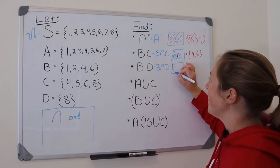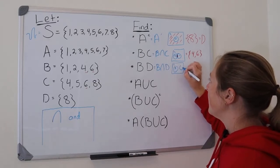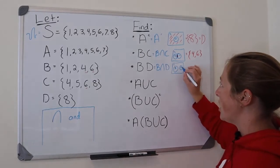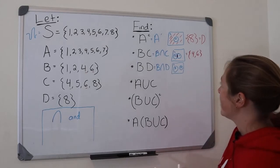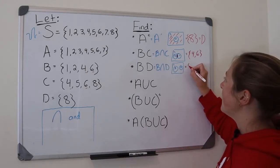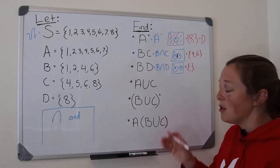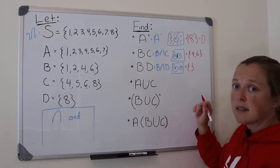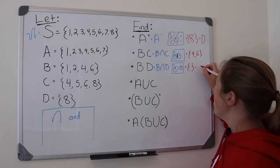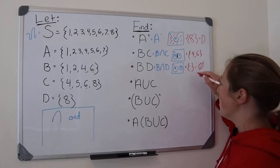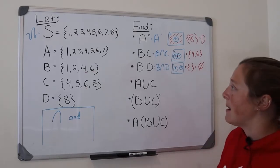So what's our answer? It's the empty set. A few ways you can write the empty set. You could write just curly brackets with nothing in between them, or you could write like a circle with a slash through it. That means empty set.